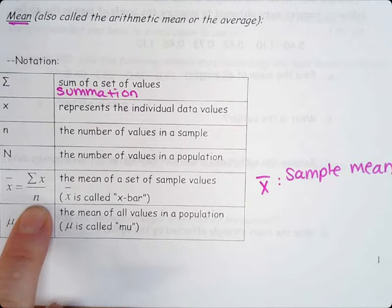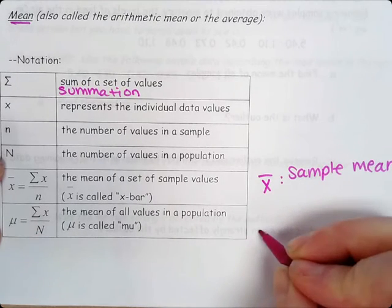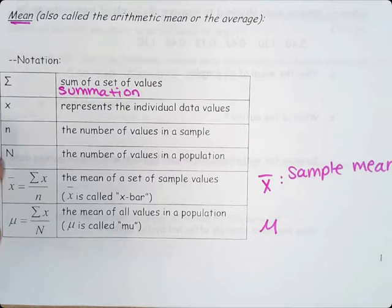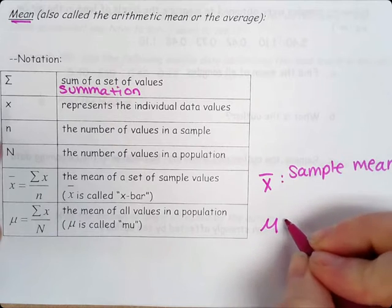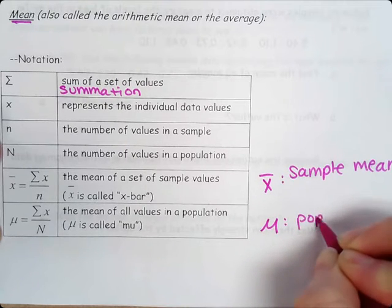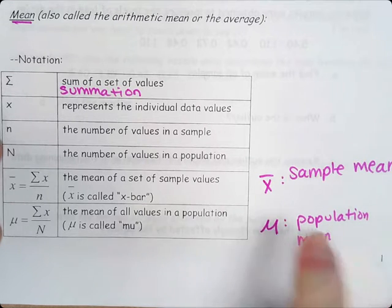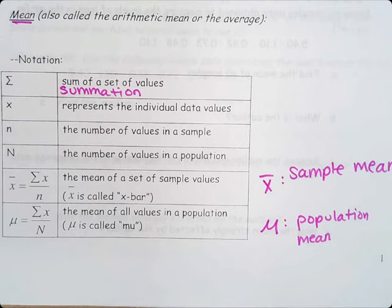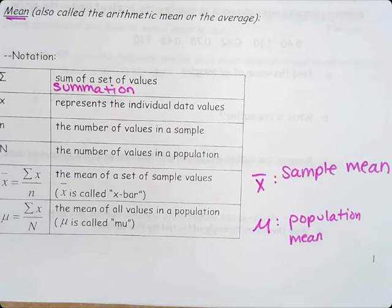Mu is a U with an extra little line on there. Mu is your population mean. So the mean of all values in the population. You've got to know the difference between the two symbols so you don't get them mixed up. This one's called mu and this one's called X bar.